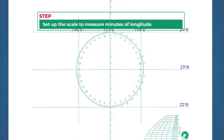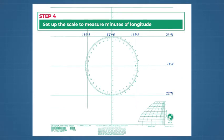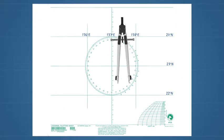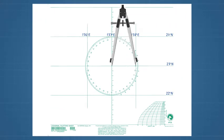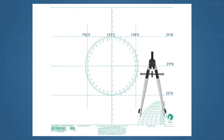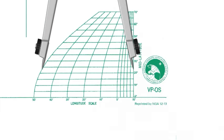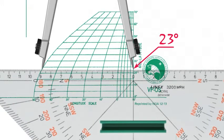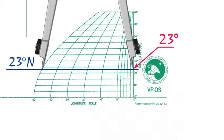Step 4: Set up the scale to measure minutes of longitude. Measure the horizontal spread between any two consecutive longitudes. Go to the longitude scale located on the bottom right of the plotting sheet and horizontally match the longitude spread with the sides of the longitude scale at the middle latitude of 23 degrees. Draw a horizontal line to represent 60 minutes of longitude. Label the line 23 degrees north.